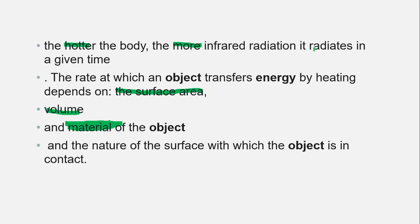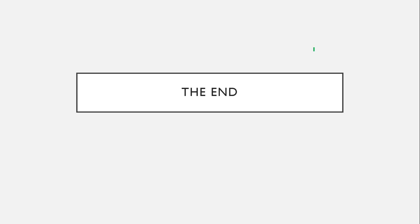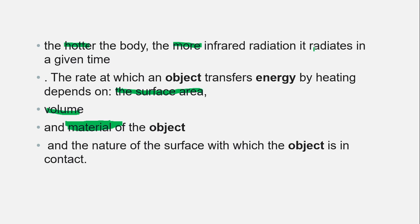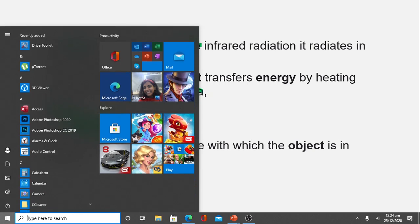That concludes our discussion of radiation. We've talked about how objects can be good emitters, absorbers, or reflectors, and covered the key experiments. In the next topic, we will discuss the applications of all three modes of heat transfer.